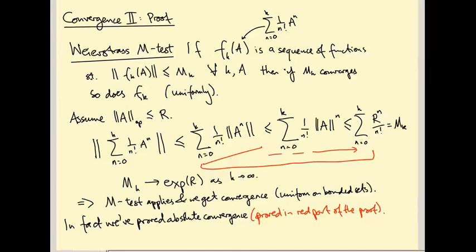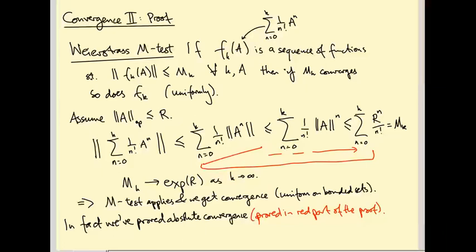This is almost everything we want, except we also want to be able to differentiate exp(A) term by term — to take d/d(something) inside the sum. For that, it's not enough to prove uniform convergence; you also have to prove that the partial derivatives of the partial sums converge uniformly. This is where the nightmare begins. If you continue watching, do so at your own risk — it's going to be fun but long and a bit messy.